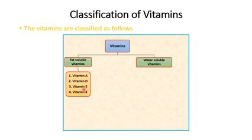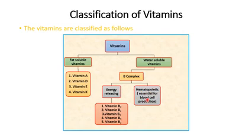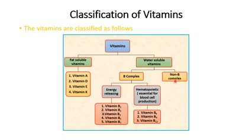Water-soluble vitamins are divided into B complex and non-B complex. Within B complex, the energy-releasing vitamins are B1, B2, B3, B5, and B7, while the hematopoietic vitamins essential for cell production are B6, B9, and B12. The non-B complex water-soluble vitamin is vitamin C. We are going to talk about each of these vitamins in detail.